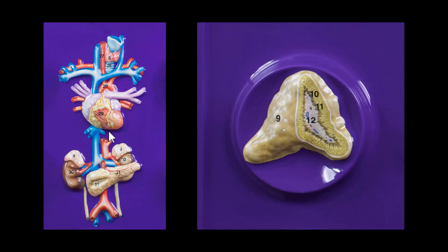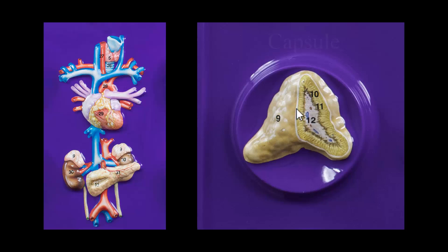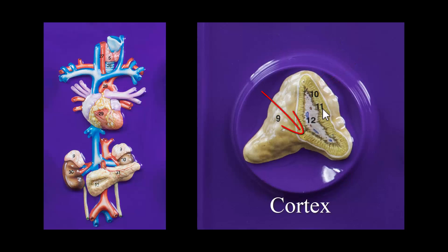Now we're moving down below the heart, below the diaphragm to the kidneys. Sitting on top of the kidneys are these glands called the adrenal glands. The adrenal gland is going to be made up of, first of all, the capsule, and then the cortex — number 11 here. Cortex means bark, so think of the bark of a tree. It's a thick outer layer — this is the cortex because it's the outer bark of the adrenal gland.